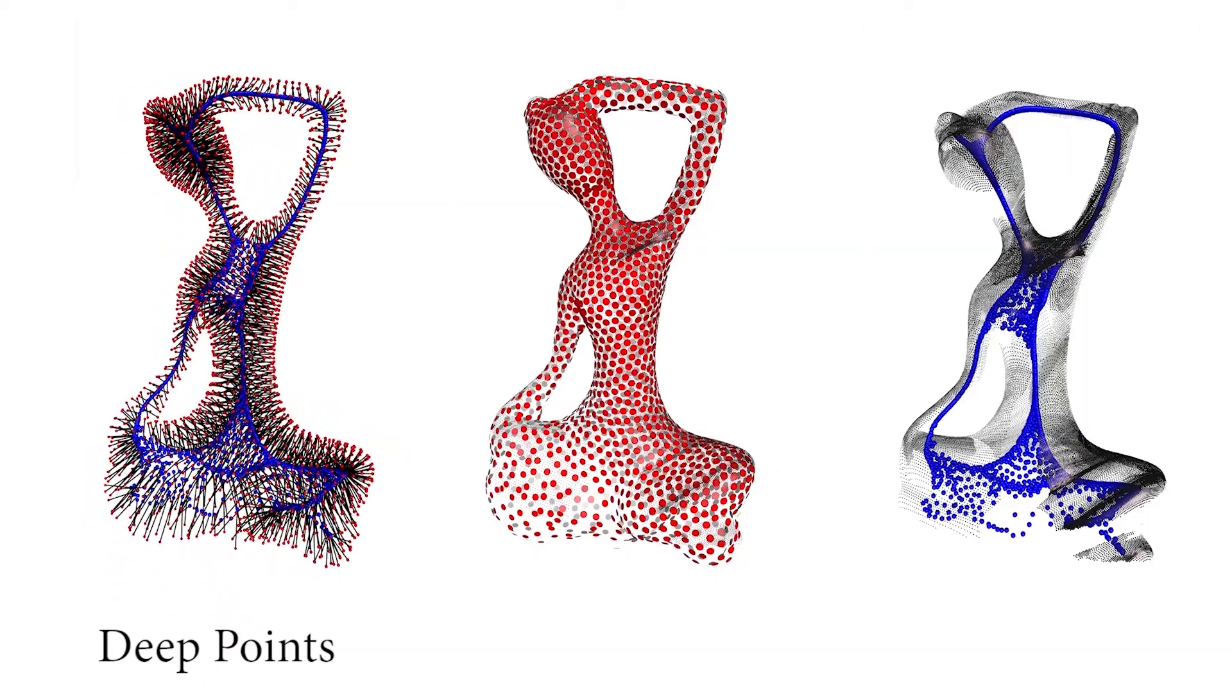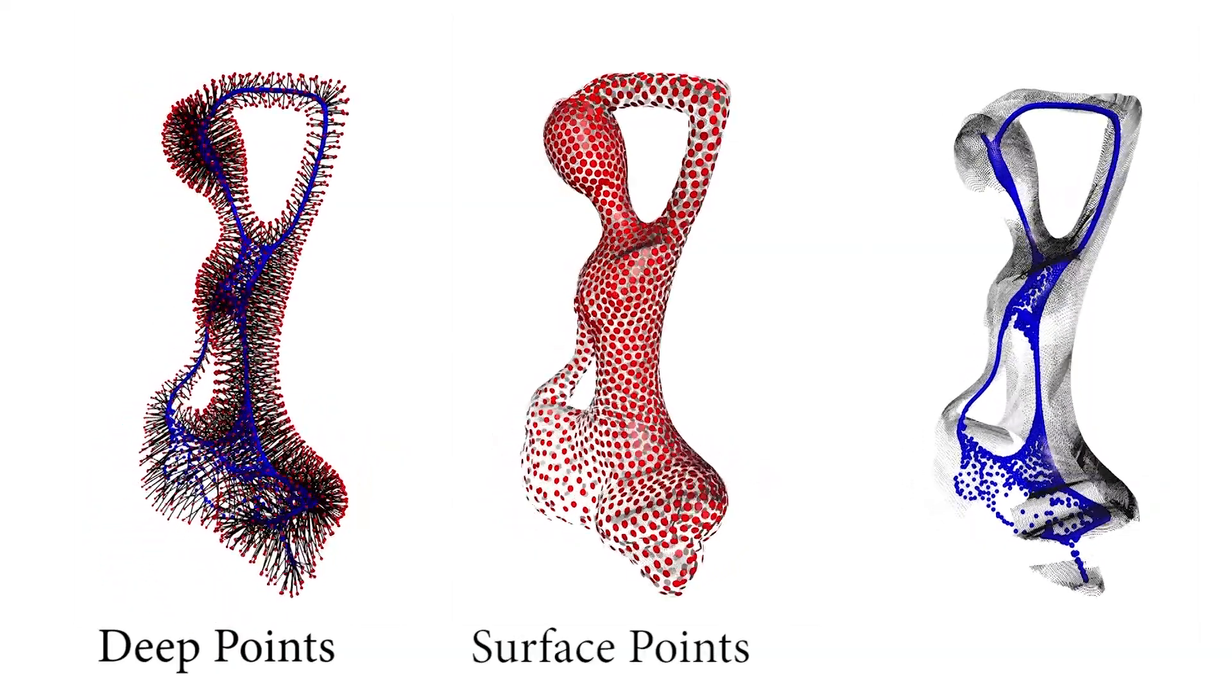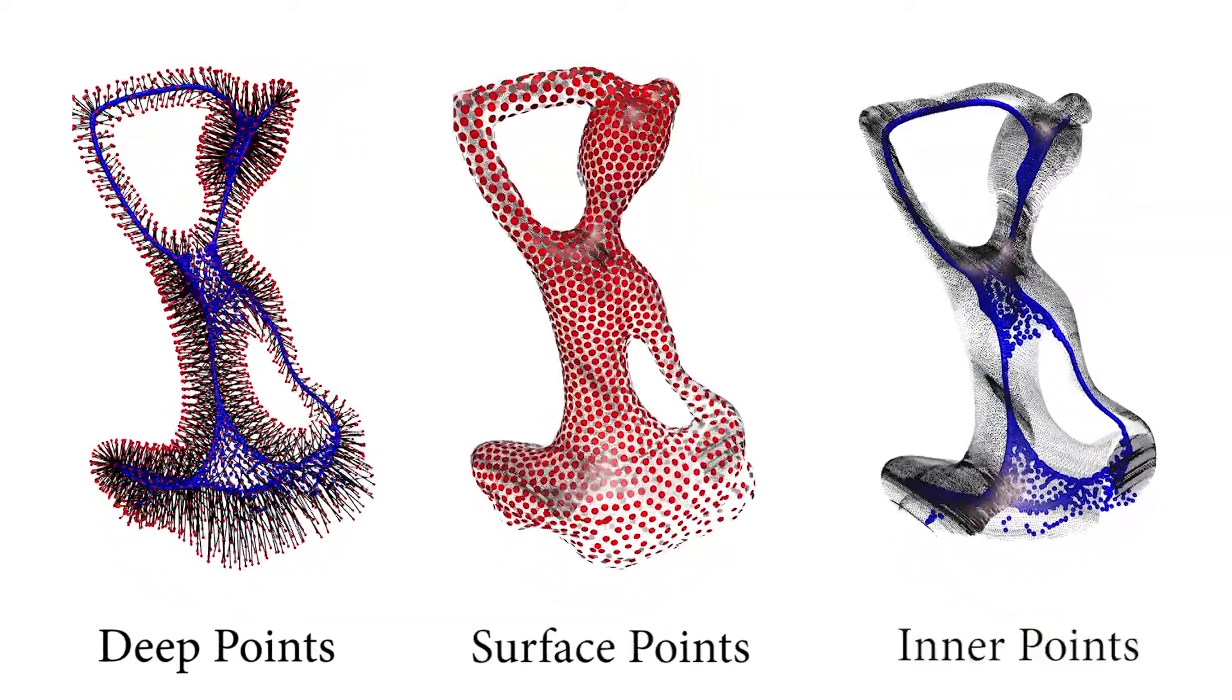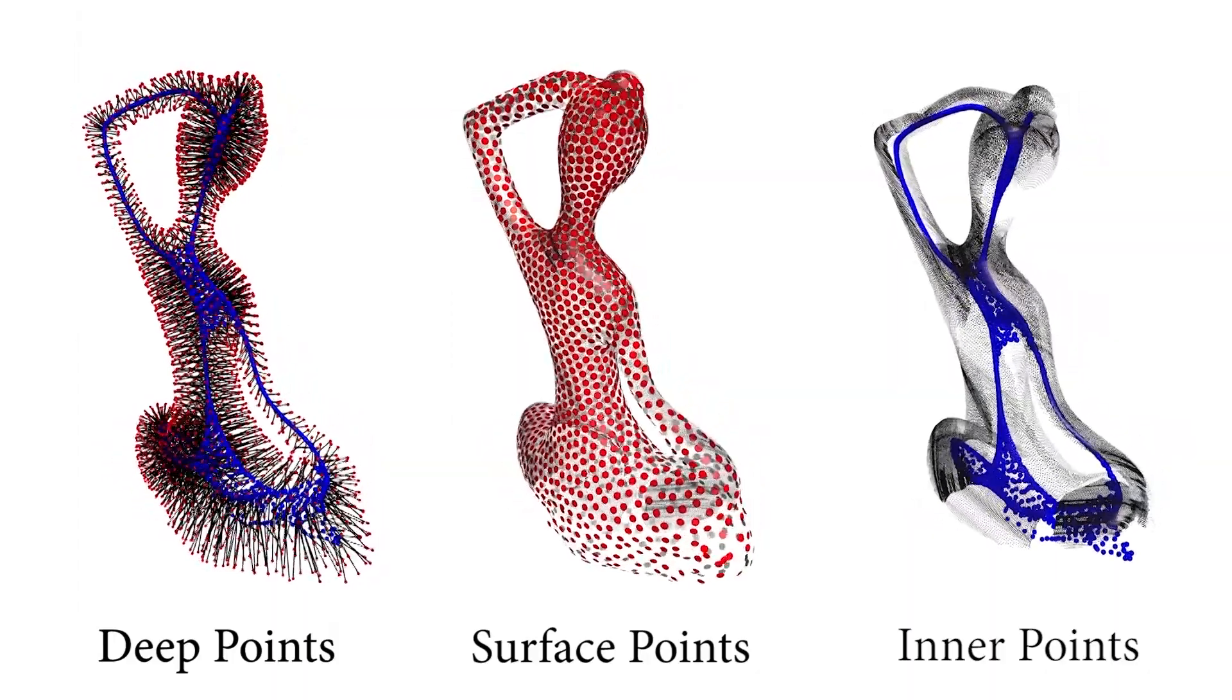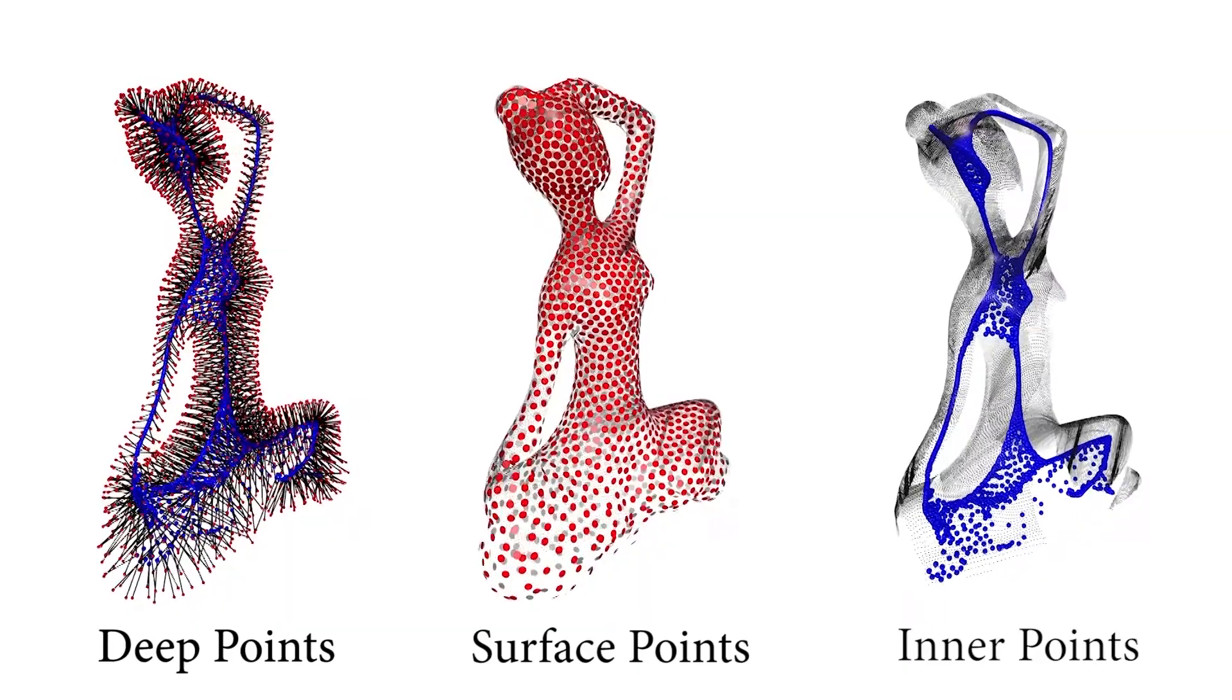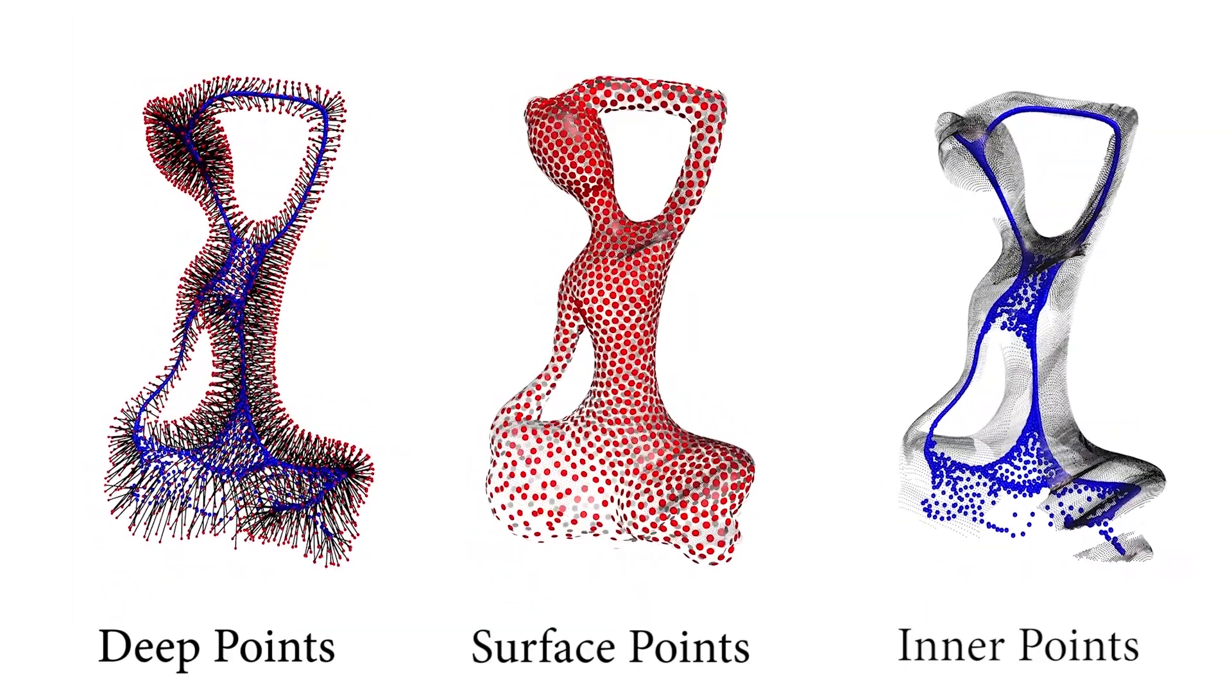The key idea is to augment each surface point into a deep point by associating it with an inner point. The inner point resides on a mesoskeleton, which consists of a mixture of 1D skeletal curves and 2D surface sheets.